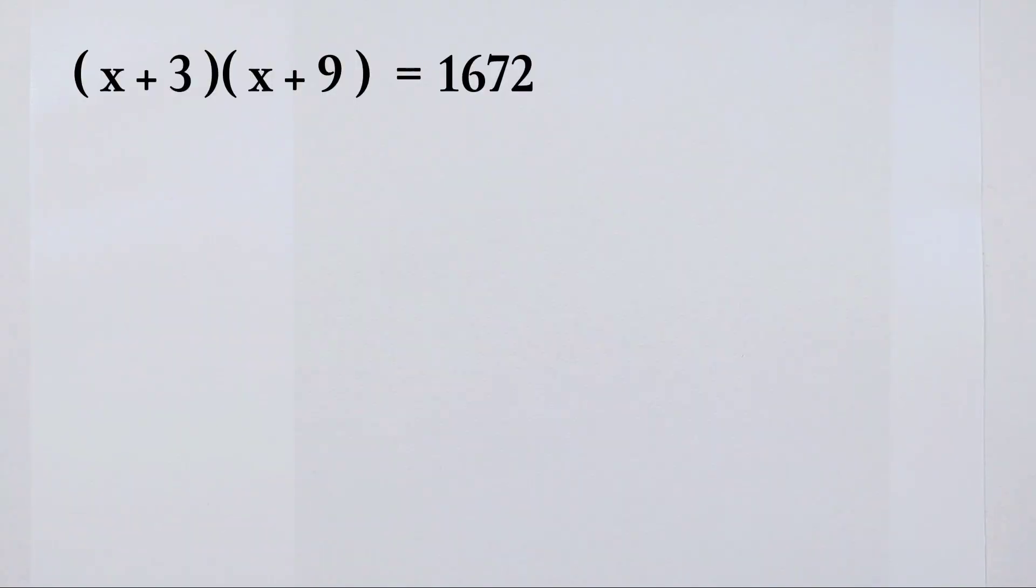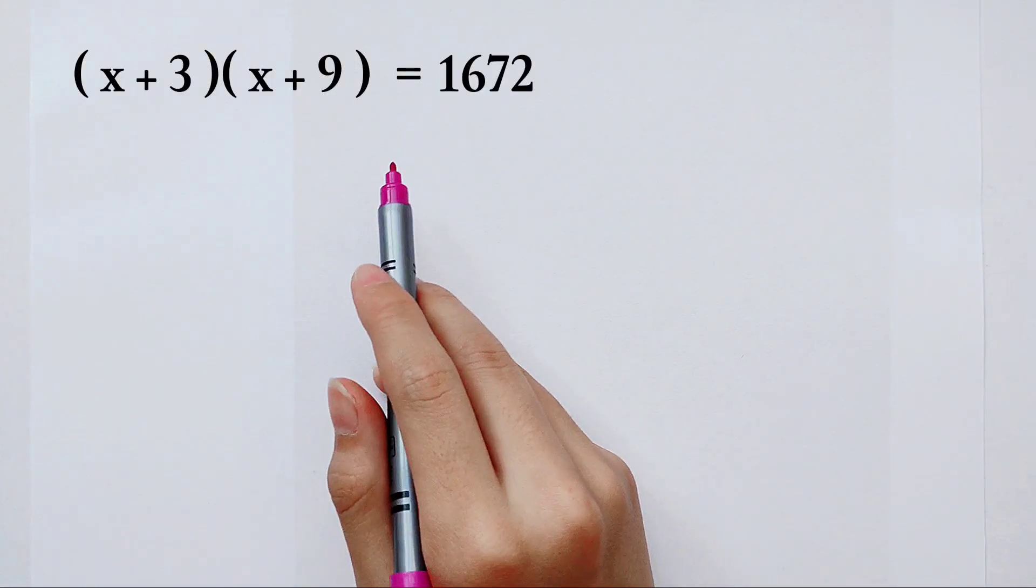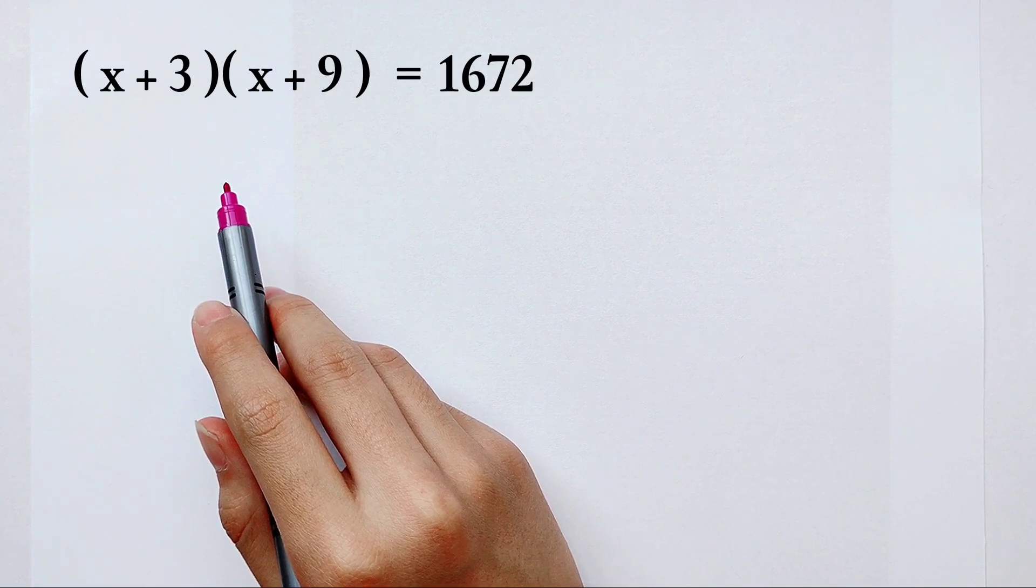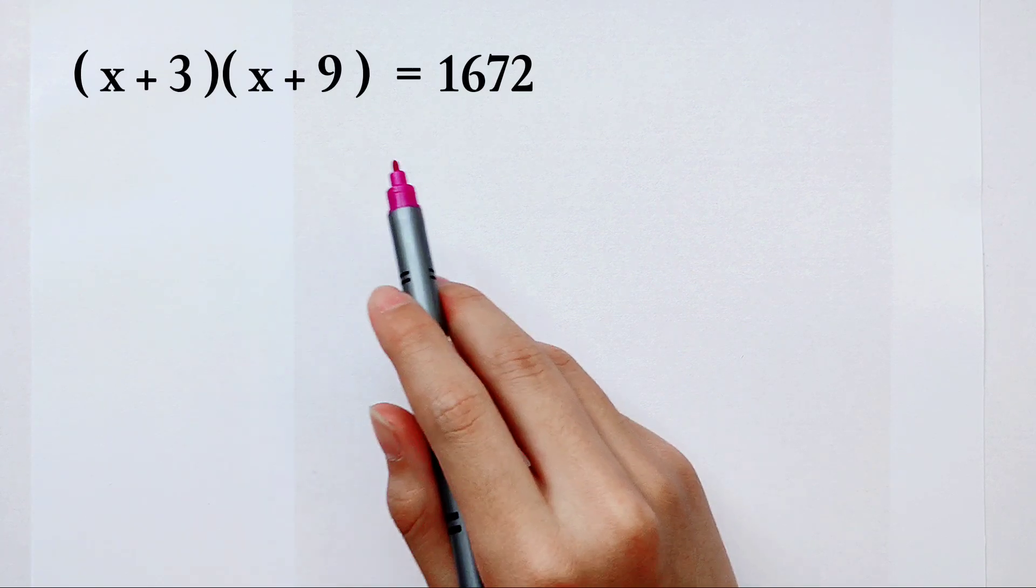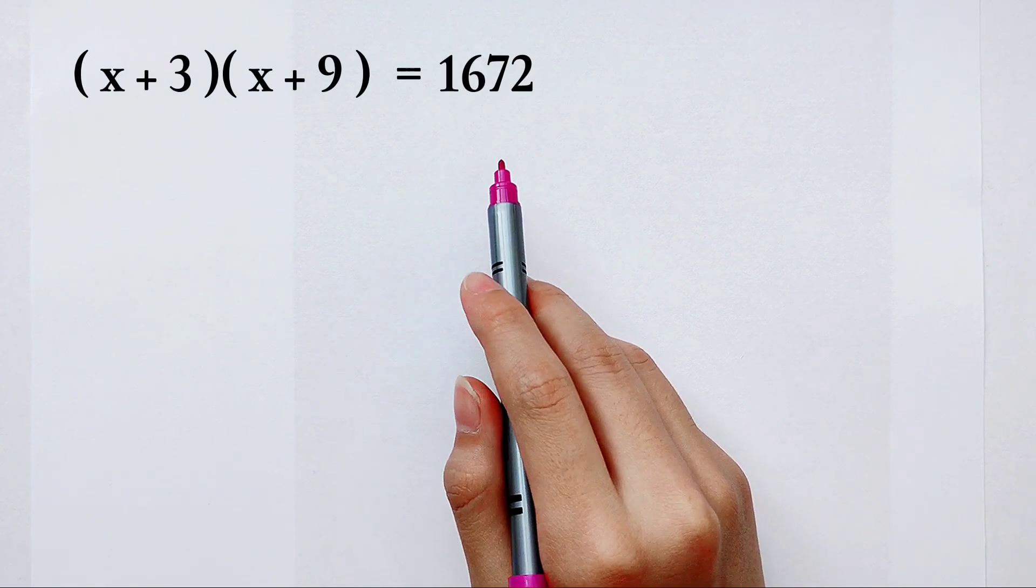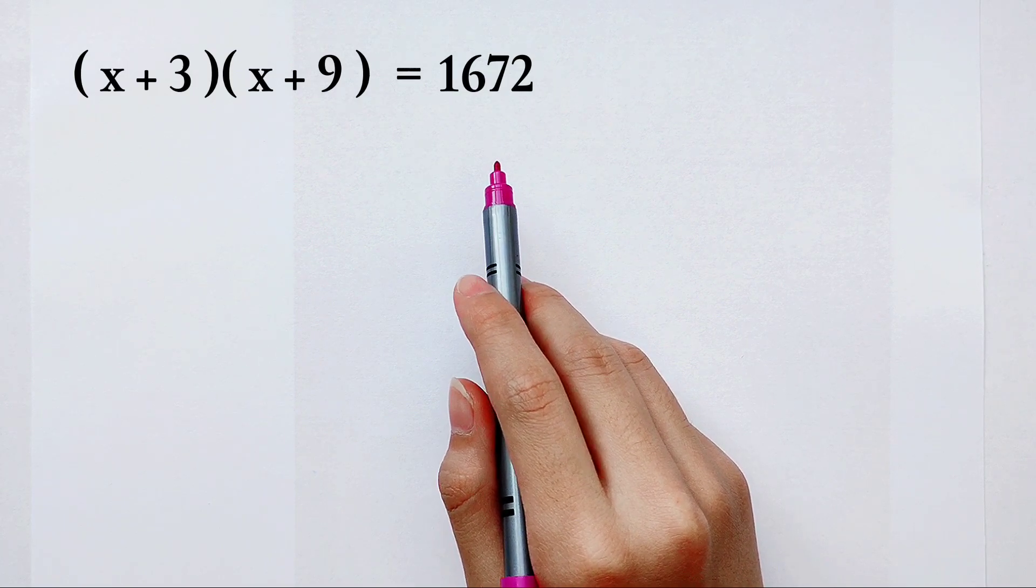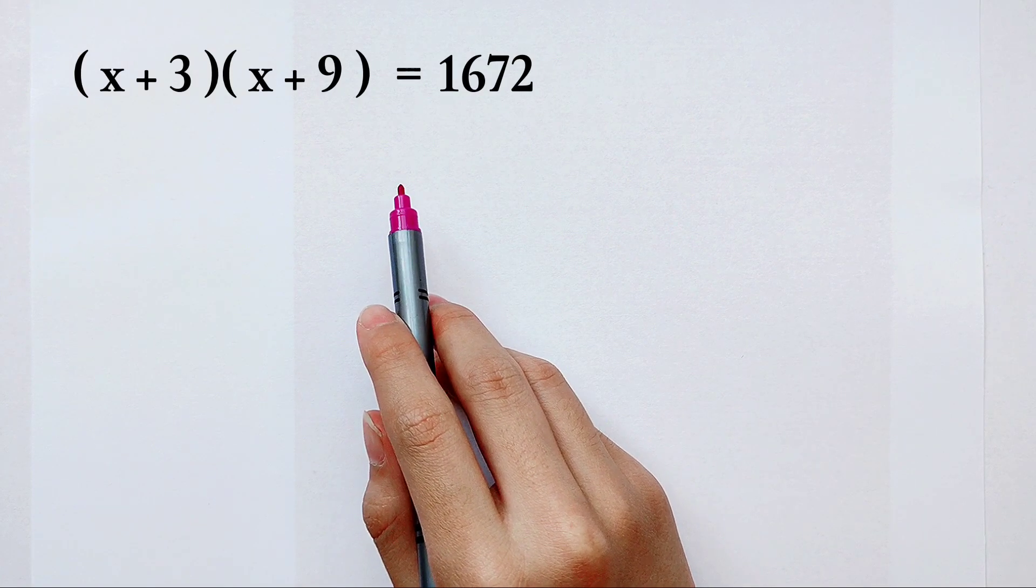Welcome to Math We Know. Solve the value of x from this equation: x plus 3 then times x plus 9 is equal to 1672.